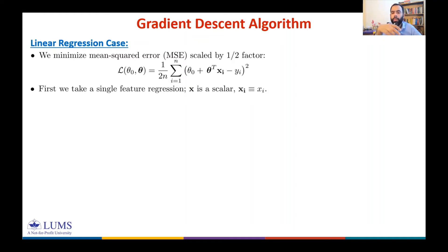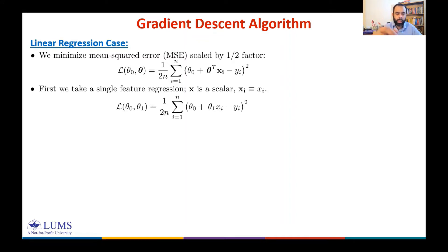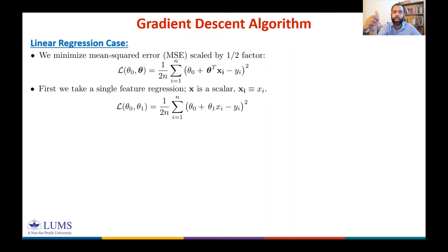The two coefficients are θ₀ (the bias) and θ₁ (associated with the scalar input x), which we want to determine by minimizing the loss function. To find the update, we need the partial derivatives of the loss function with respect to θ₀ and θ₁.